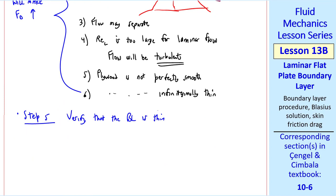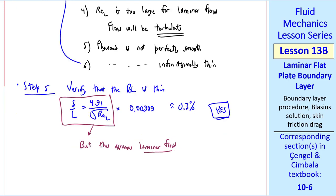Finally, step five is to verify that the boundary layer is thin. For this problem, I get delta over L is 0.003 something, or about 0.3 percent. So that certainly is thin. But again, this assumes laminar flow. The turbulent boundary layer will be thicker, as we'll find out in a later lesson.